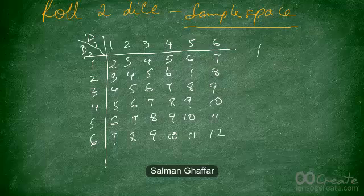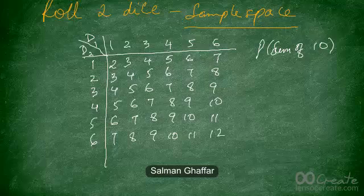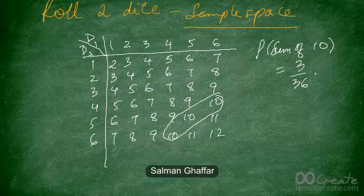For example, if a question says what is the probability of getting a sum of 10, you can see that it appears diagonally in the table. The answer would be 3 out of 36, which is equal to 1 out of 12.